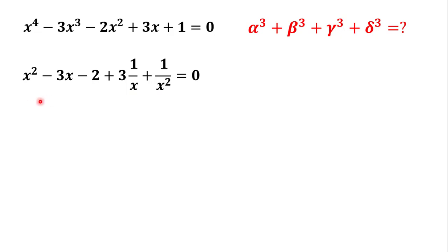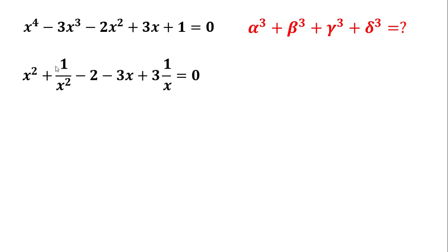We can rewrite this equation as: x squared plus (1 over x squared) minus 2 minus 3 times x plus 3 times (1 over x) equals 0, where minus 3 is a common factor in those two terms, so we can factor it out.